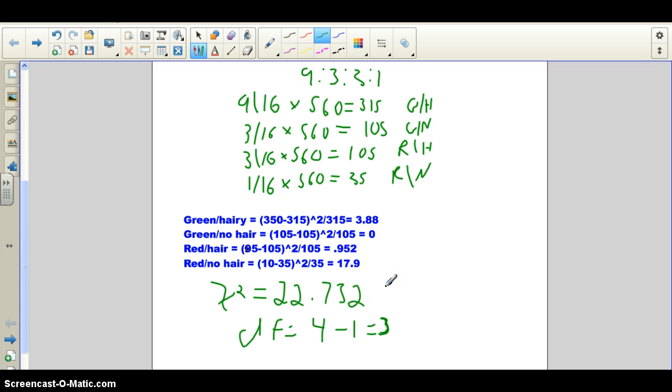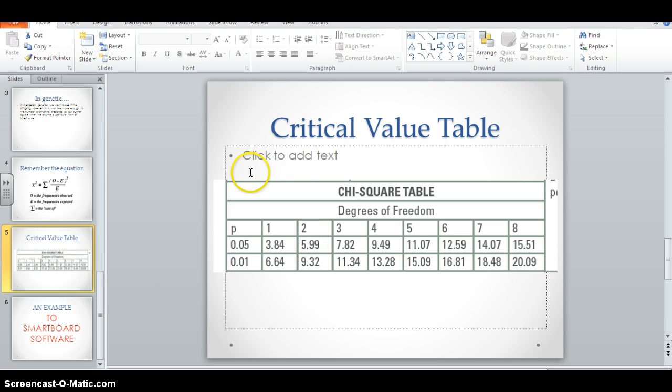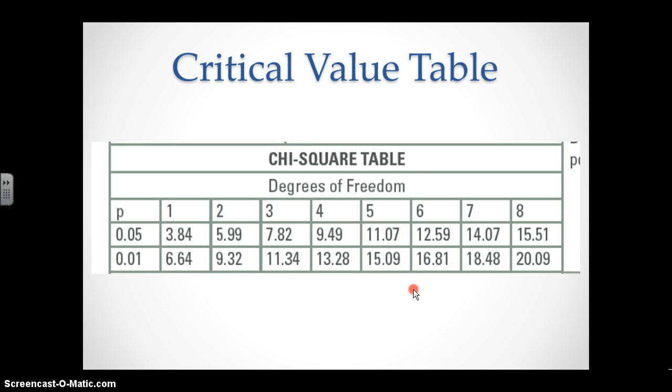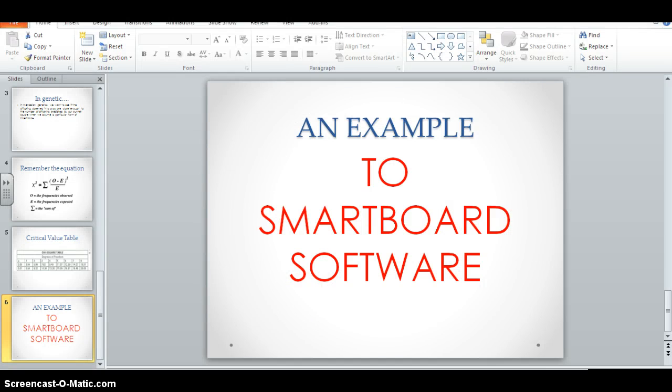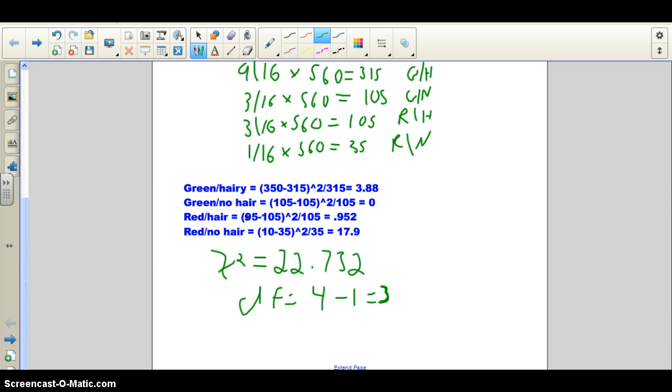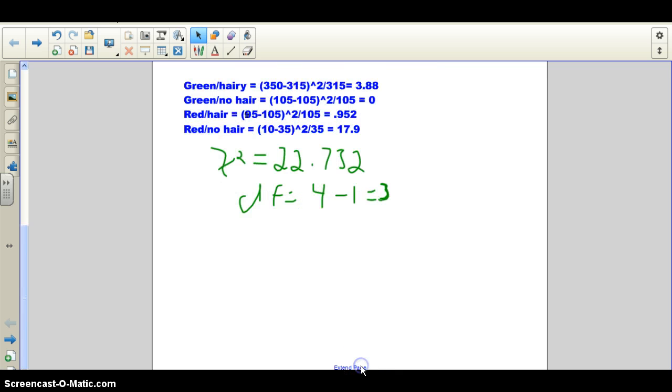Okay, now we now have to go back to our table and find out what critical value that we need to use. So if we take a look here, let's full screen this. Let me get our pointer. Our degrees of freedom are 3, and we always use 0.05, so our critical value is 7.82. So going back to the Smartboard software, scrolling down, going to the pointer and extend our page. Okay, so our critical value, our CV as we call it, is 7.82.